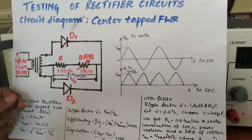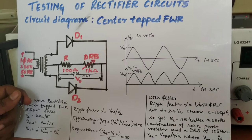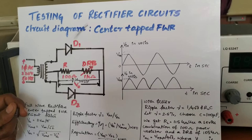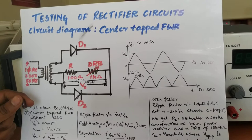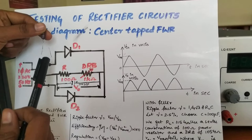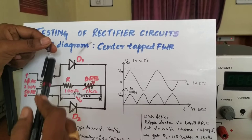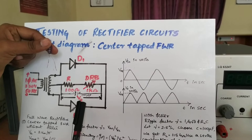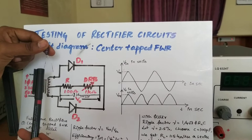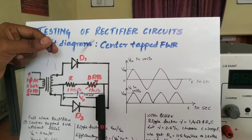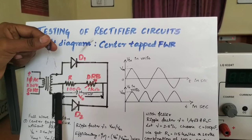Now let us continue with the experiment using the filter circuit. For the filter circuit, everything — connections and apparatus — remains the same, but you add a capacitor acting as a filter, connected across the load resistor. The capacitor is an electrolytic type of 100 microfarad. The longer lead is the positive terminal and the shorter lead is the negative terminal. The positive terminal must connect to the higher potential side, and the negative to the lower potential side — do not forget this.